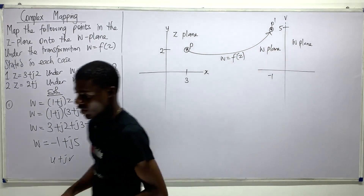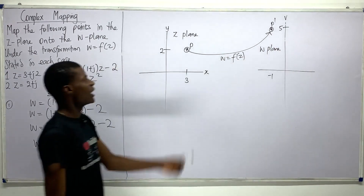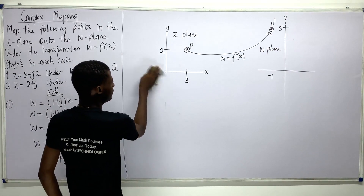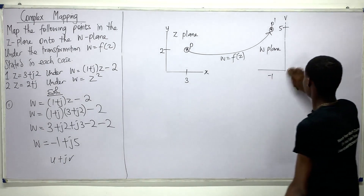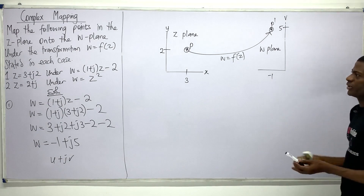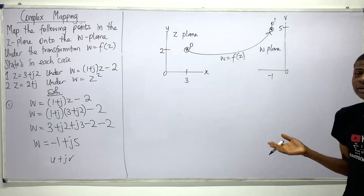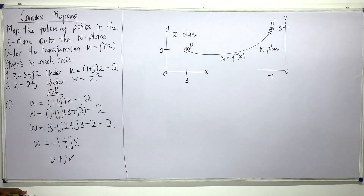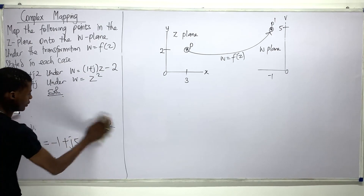I can label this w = f(z) with an arrow showing the mapping from P to P prime. Note that the negative-axis portions of the diagrams were not strictly needed — some diagrams only show the positive axes and that is still correct. Now for the next question: z = 2 + j under w = z².